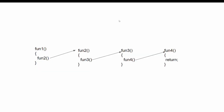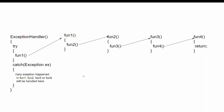Let us understand this easily using function calls. In this example there are four functions: fun1 calls fun2, fun2 calls fun3, fun3 calls fun4. If you want exception handling, one option is to put try-catch blocks in all functions, or you can put a try-catch just in the first function so that if an exception occurs in any of them it is handled by that catch block, because all control flows through that first function. In our project we are going to do the same thing, but instead of putting the exception logic in fun1 we separate it out into another class.